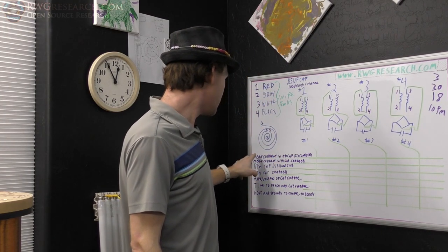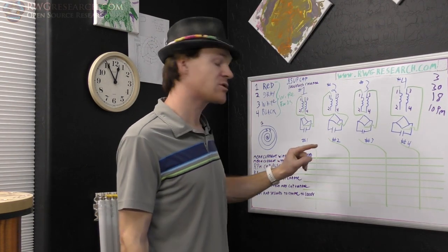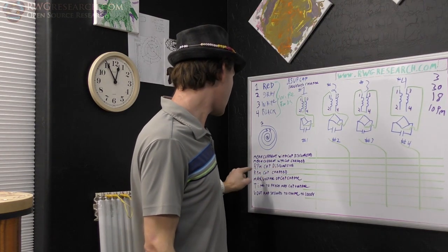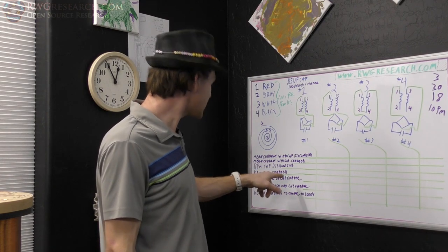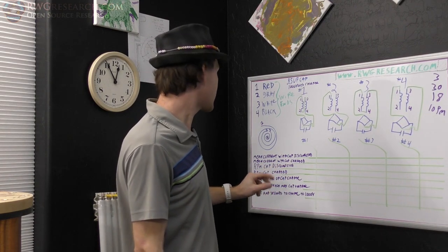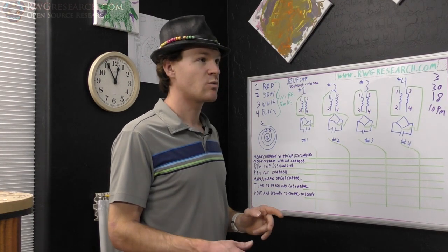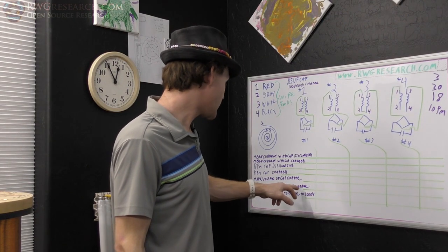The things we are wanting to measure: the mean current with the cap disconnected, the mean current with the cap charged, RPM with the cap disconnected, RPM with the cap charged, max voltage of the capacitor charged.